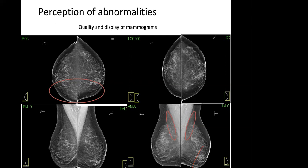On the oblique view, what we call the 'milky way' should be nice and fatty there. If you're interpreting mammograms and anything looks different from what normal features look like, you have to question that and do further tests — extra views such as magnification views, spot compression views, or lateral views. More recently, breast tomosynthesis and contrast enhanced mammography have become available. If you see anything abnormal, you do further tests to scrutinize that area.